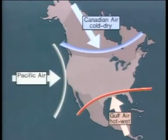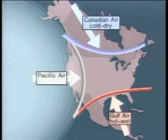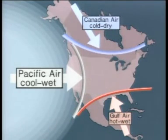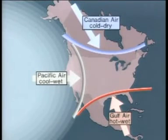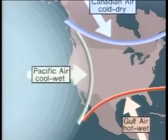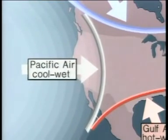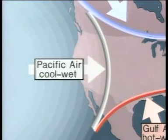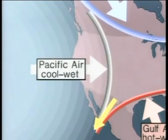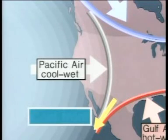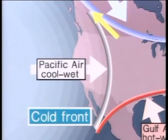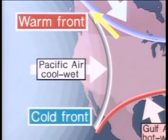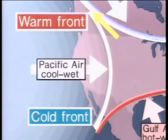During both summer and winter, Pacific air pushes across from time to time — it is cool and wet. It's warmer than Canadian air because it originates over a cool ocean, not over a cold continent. It is wet, but not as wet as Gulf air because it is not as warm and can't pick up as much water vapor. When Pacific air comes in contact with Gulf air, it creates a cold front. When it comes in contact with Canadian air, it creates a warm front, because Pacific air is warmer than Canadian air but colder than Gulf air.